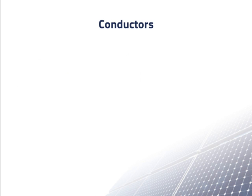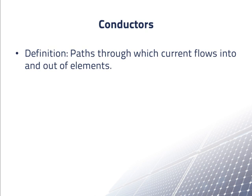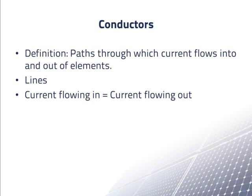Conductors are paths through which current flows into and out of elements. They are represented by lines. Conductors also always have zero net charge. Current flows into conductors and out of conductors, and into and out of junctions between conductors, but the total flowing in and the total flowing out must balance. This is one of the laws of the theory of circuits.